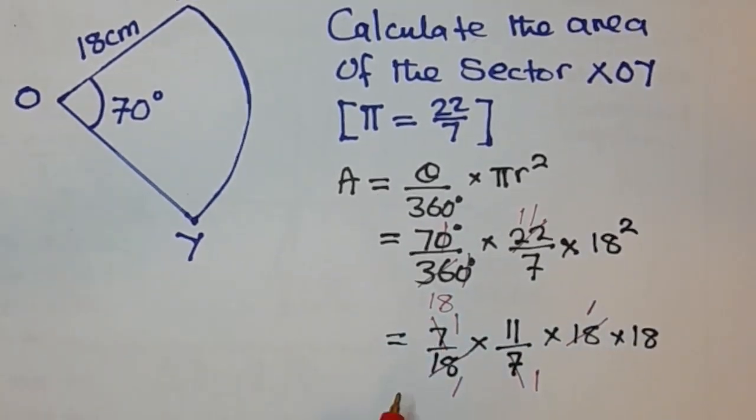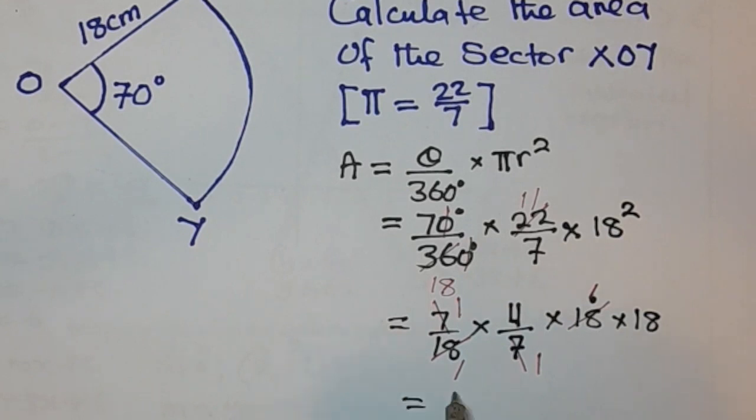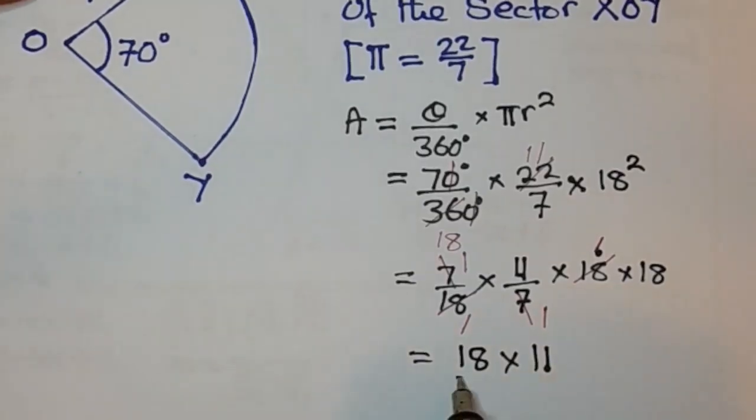So what you are remaining with now is 1 times 11 is 11, 11 times 1 is 11 times 18. So on top here, you have 18 times 11, or 11 times 18, which is just the same. Then over 1 times 1 is just 1.